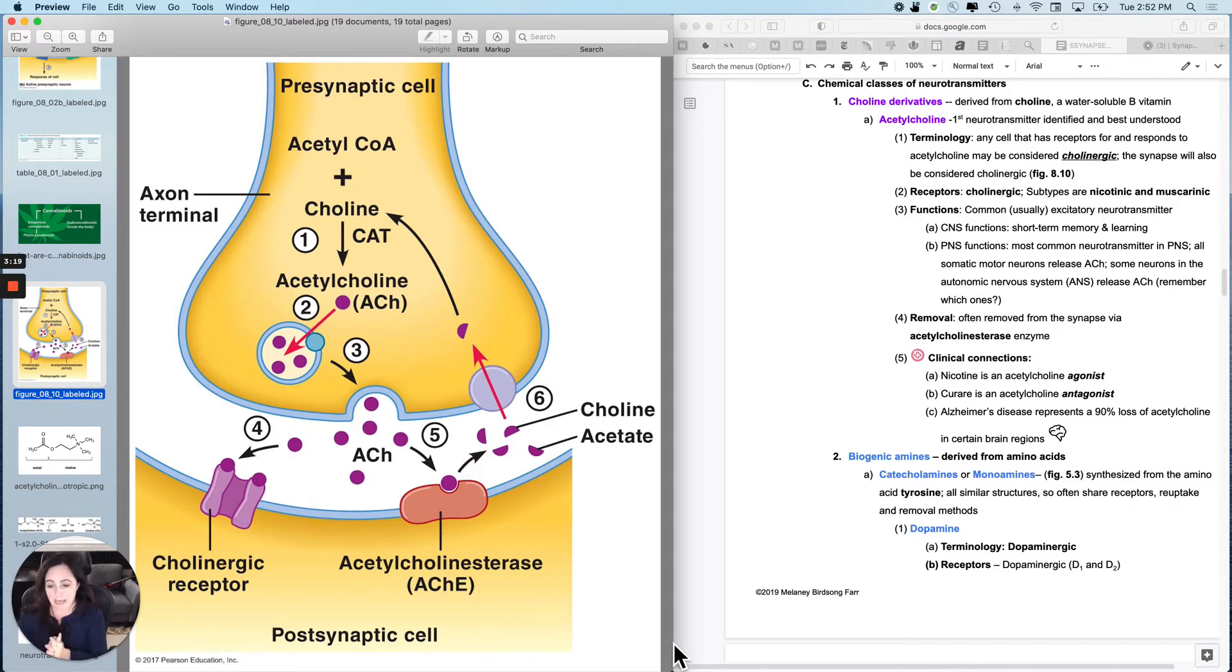The receptor types for acetylcholine, there are two. This is only showing one, but there are nicotinic cholinergic receptors and muscarinic cholinergic receptors. We'll talk about those a little bit more in the future, but nicotinic cholinergic receptors were named that because they not only bind acetylcholine, they also bind nicotine. And muscarinic cholinergic receptors were named that because they not only bind acetylcholine, they also bind a mushroom poison called muscarine.